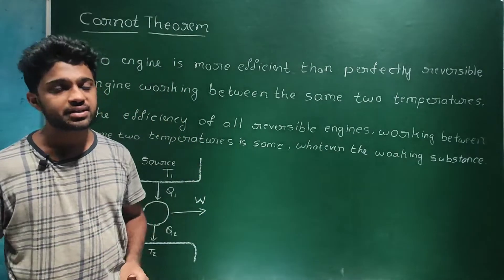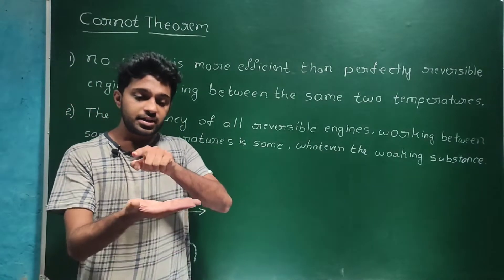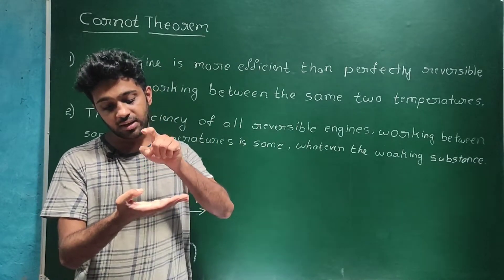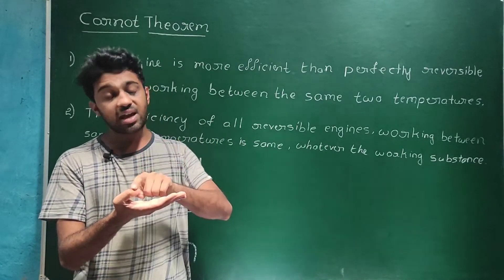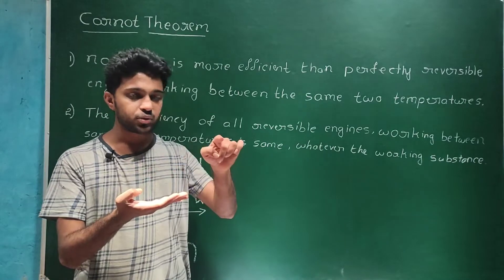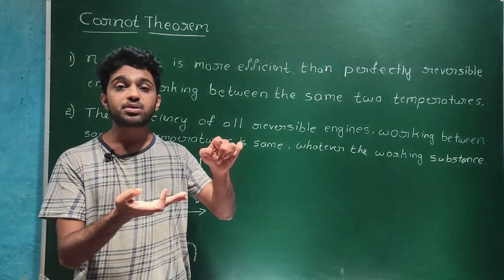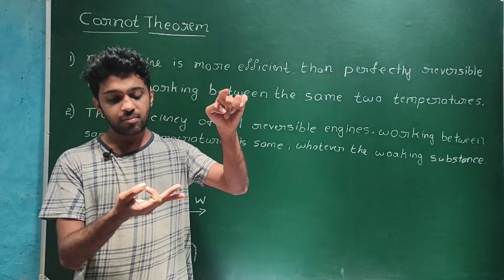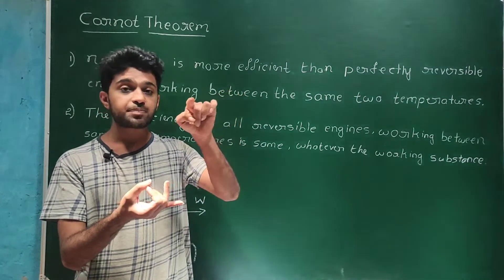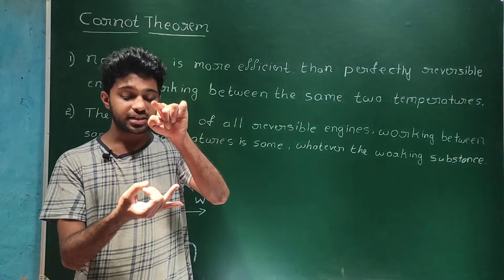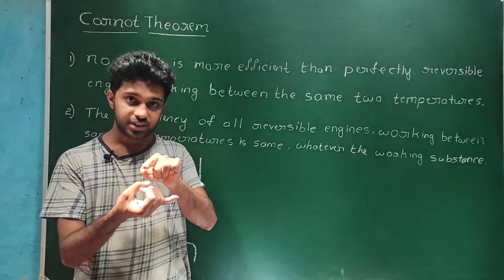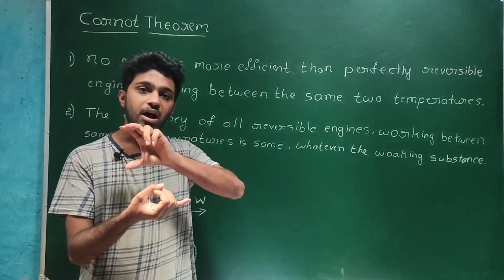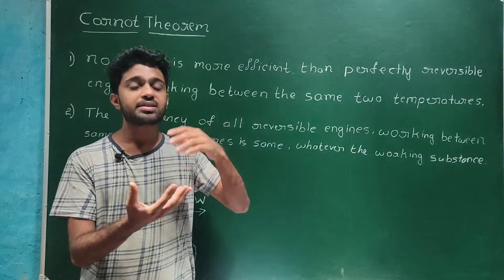This is the reversible engine. The cycle starts with adiabatic compression, then isothermal expansion, then adiabatic expansion, and finally isothermal compression. These are the four stages of the Carnot cycle.